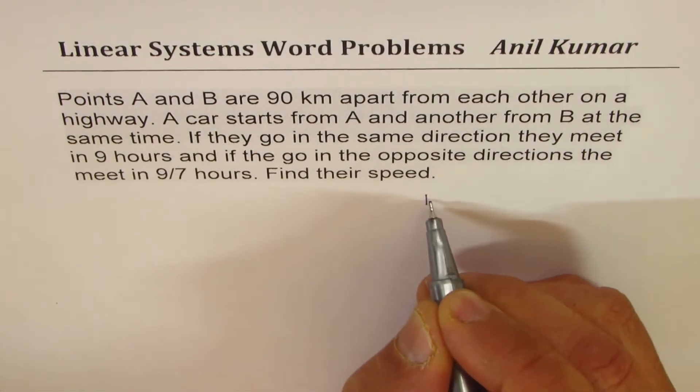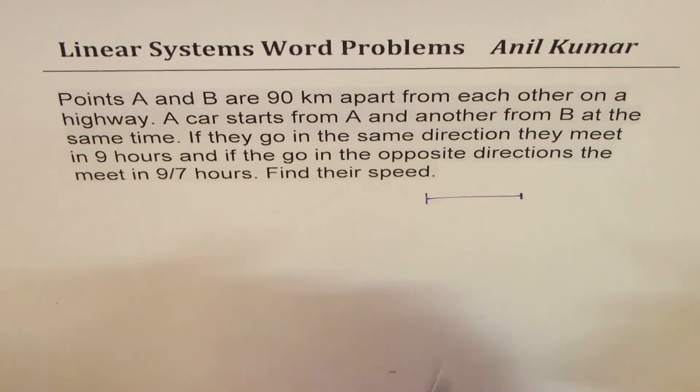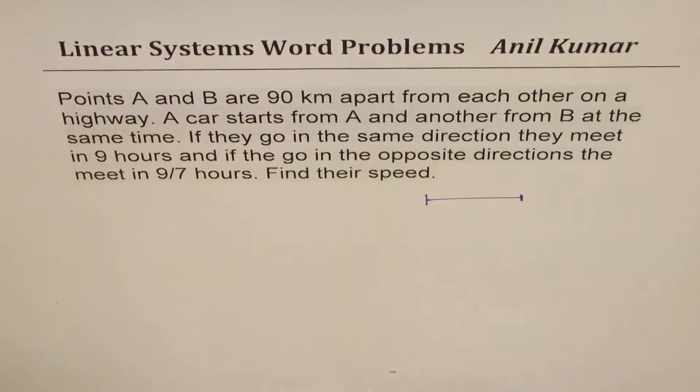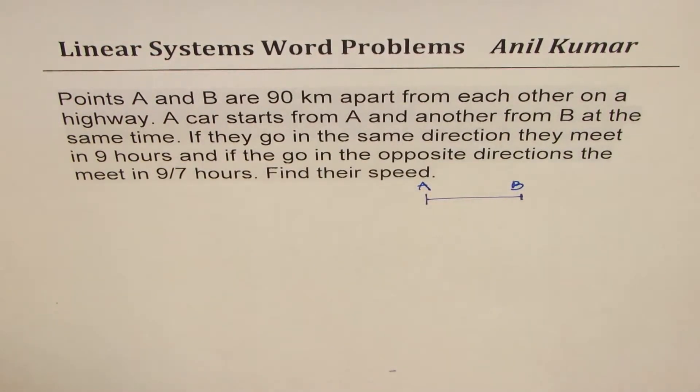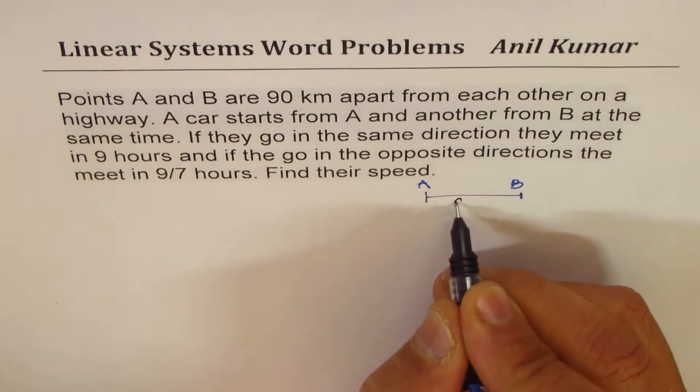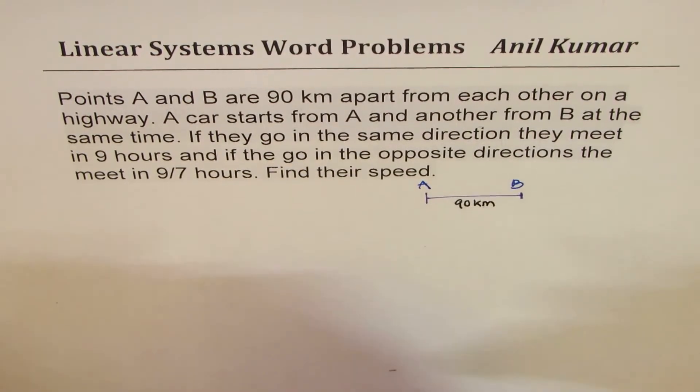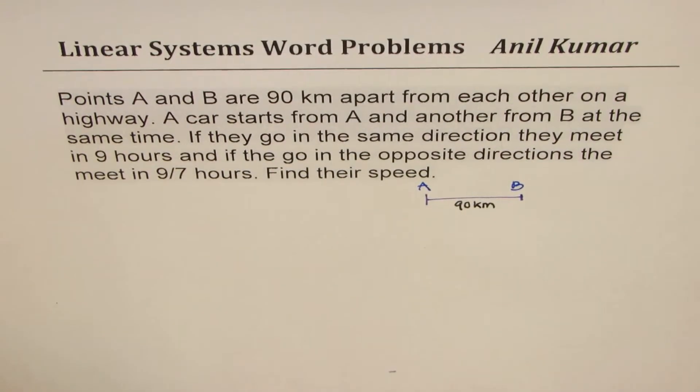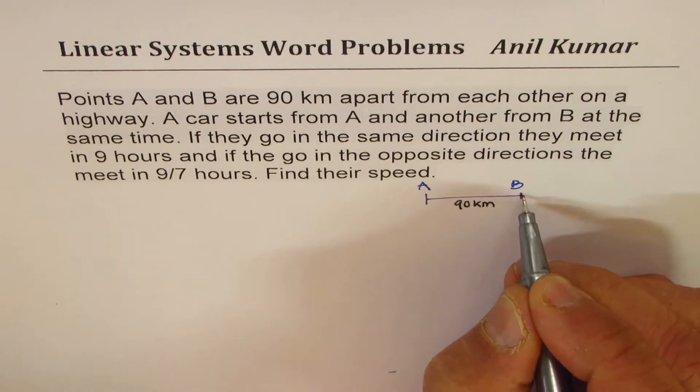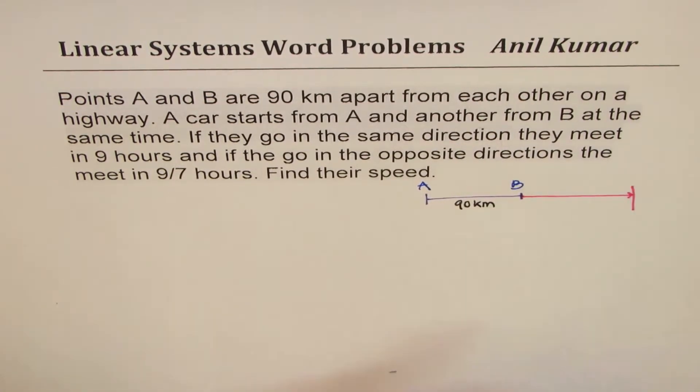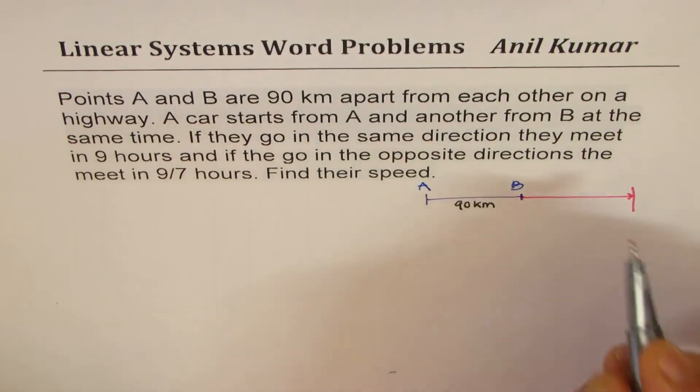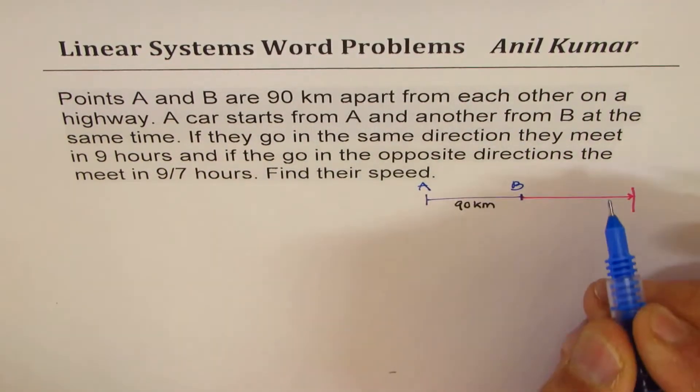Now, the situation is kind of like this. So we have A and B, which is 90 km apart. So here we have A, this is B, and the distance between them is 90 km. Let's say if they move in the same direction, both are moving in this direction, then they meet after 9 hours.